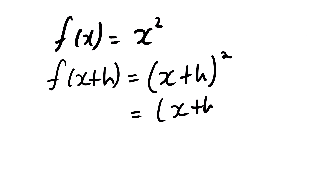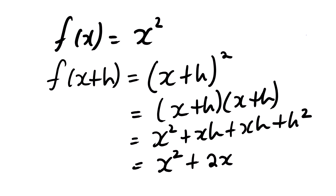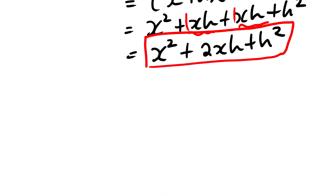Simplifying x plus h squared, we get x squared plus xh plus xh plus h squared. That gives us x squared plus 2xh plus h squared. The 2xh comes from combining like terms — 1 plus 1 equals 2 — and we take the variables x and h. Now we can go ahead and substitute into our equation.